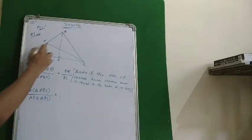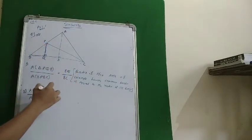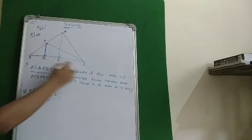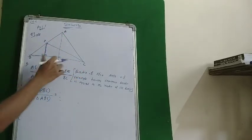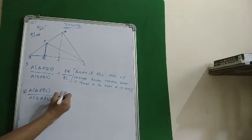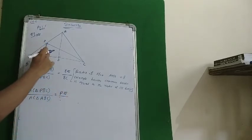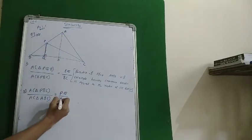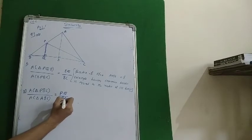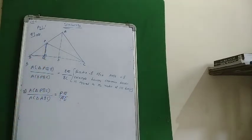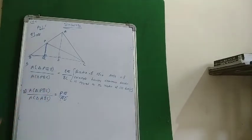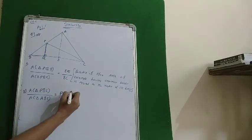Therefore, the ratio of area of triangle PBC to area of triangle ABC — both triangles having a common base — is equal to the ratio of their heights, that is PQ upon AD. PQ is the height of triangle PBC and AD is the height of triangle ABC, and since the base is common, base gets cancelled.